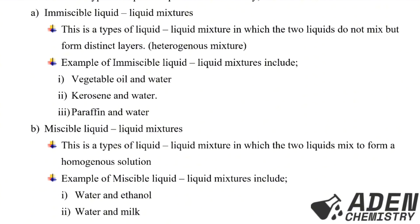By B, we are going to see the other type of liquid-liquid mixture — miscible liquid-liquid mixtures. This is a type of liquid-liquid mixture in which the two liquids mix to form a homogeneous solution, or they mix to form a uniform layer. Examples include water and ethanol, and water and milk.